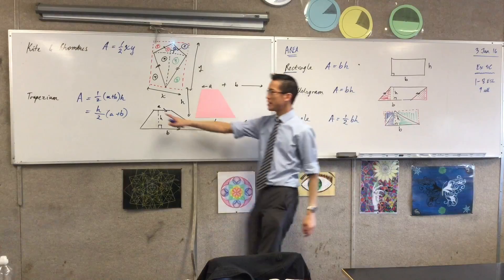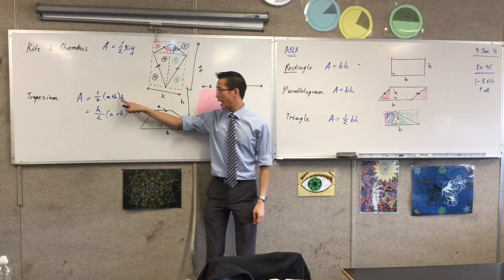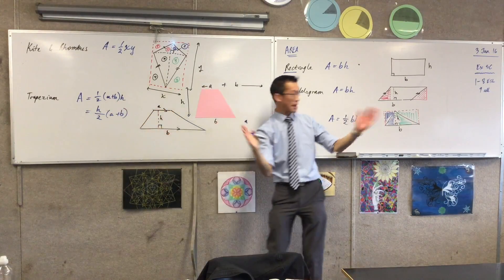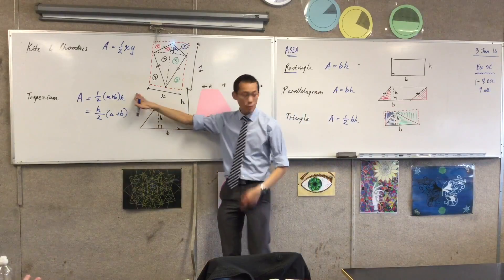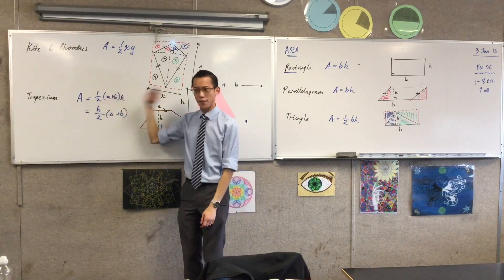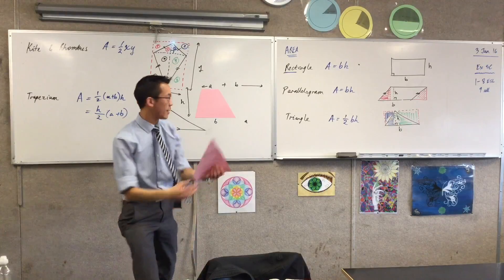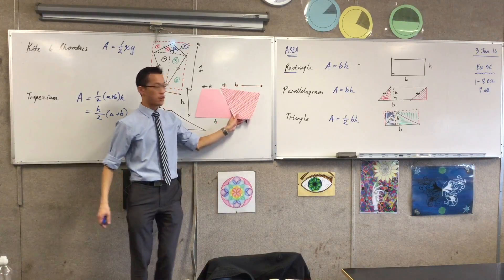So, do you see what I did? This line here was to say, okay, the a plus b was the base of my parallelogram, the height was the height, but the trapezium's just half of that big parallelogram that I made. I only want the original one.